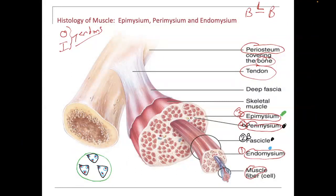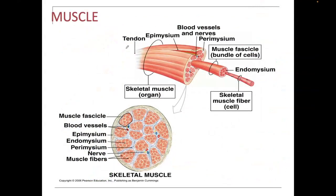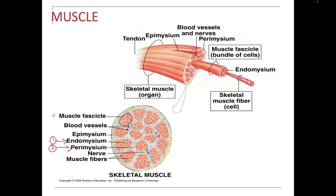The muscle is contracting — it has the ability to shorten and lengthen. All it does is transmit the contractile tension to the tendon, and then the tendon tugs on the bone. The same concept we just spoke about can be seen on a different cross-section. We have the endomysium innermost, perimysium in the middle. We'll call endomysium number one, perimysium number two.